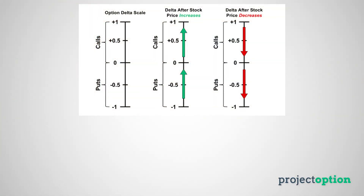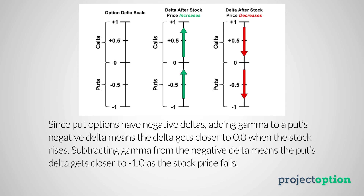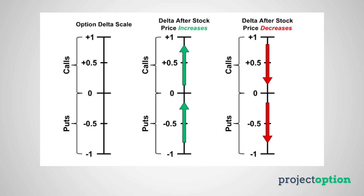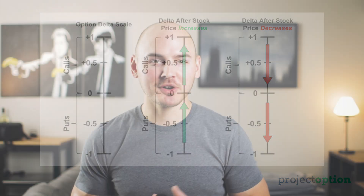Later on I'm going to explain how we can understand this intuitively from a probabilistic standpoint, but for now just keep these formulas in mind. All option deltas increase after an increase in the stock price and decrease after a decrease in the stock price. Since put options have negative deltas, adding gamma to the negative put deltas means put deltas get closer to zero as stock price increases, making their prices less sensitive to future movements. The opposite is true for call options — call option deltas grow towards 1.0 as the stock price increases, making their prices more sensitive to future movements.